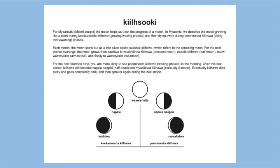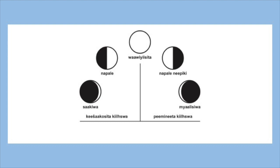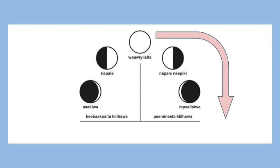On the next page, the Myaamia perception of the cycle of the moon is explained. Below the explanation is a visual representation of the cycle. The cycle begins on the left with Kilsua, moon, growing until it reaches Wawiyisuta, full moon phase. After this point, it begins to die until it goes completely dark. Each month is marked by one complete cycle.